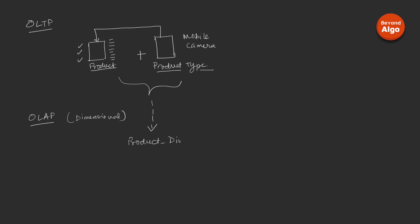In your OLAP system, you might have a product dimension table containing the product ID, the product name, as well as the type. Instead of keeping the type in a separate table as done in the OLTP system for normalization requirements, in the OLAP database you put both pieces of information together into a single product dimension table. The benefit is that whenever a user wants to query your database, they don't need to query information from two different tables.